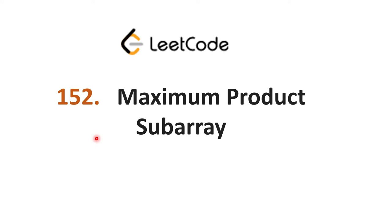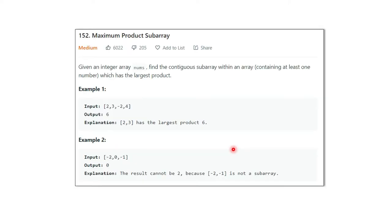Hello everyone, welcome to my channel. Today we will discuss LeetCode problem number 152, which is Maximum Product Subarray. We have to calculate the maximum product in a subarray. We will be given an array and from there we have to find a subarray which has the maximum product. This is problem 152 on LeetCode — the input will be one array and we have to find the subarray which has the maximum product.